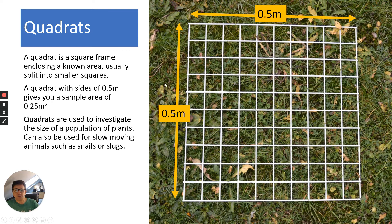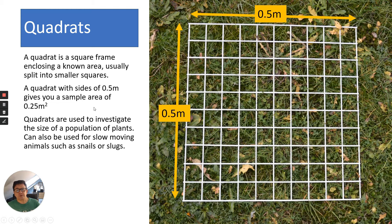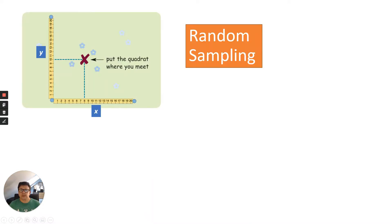A quadrat is usually split into smaller squares — this one is split into a hundred smaller squares, making 100% cover. A quadrat with sides of 0.5 metres gives you a sample area of 0.25 metres squared (0.5 × 0.5). Quadrats are used to investigate the size of a population of plants, but you could also use them for slow-moving animals such as snails, slugs, or earthworms.